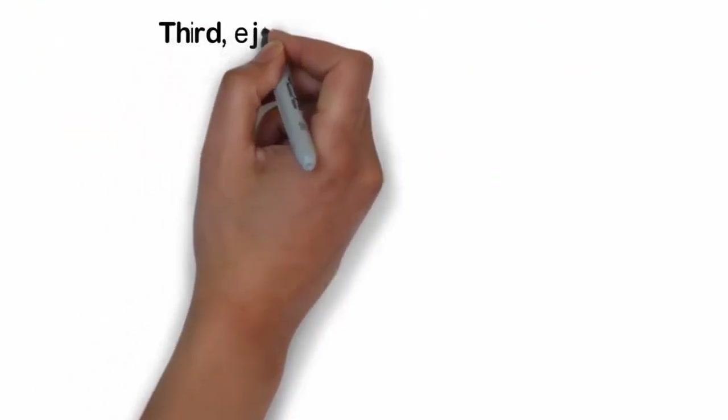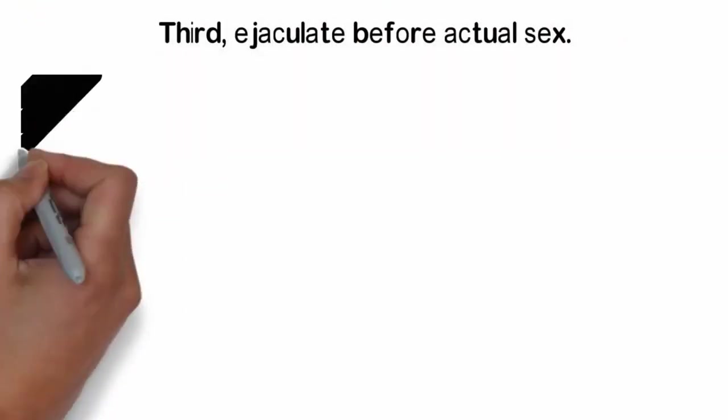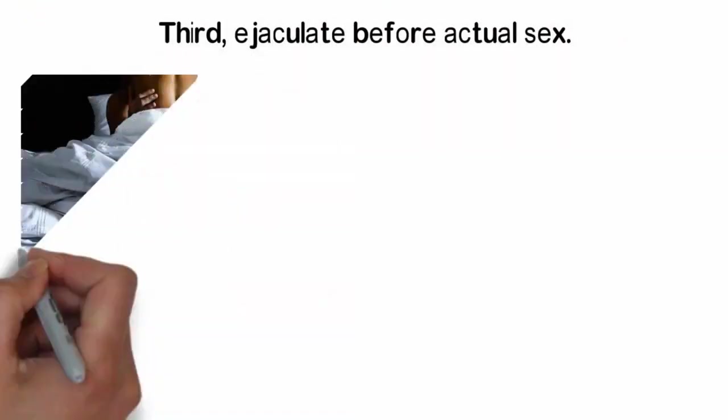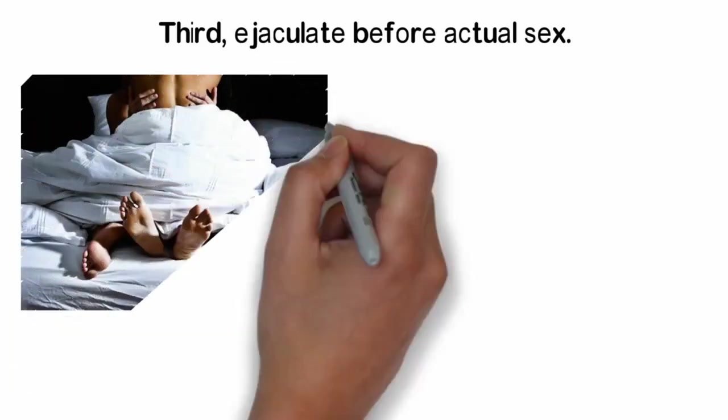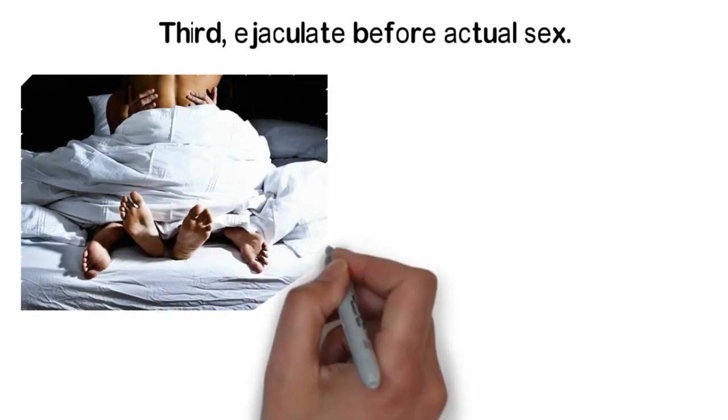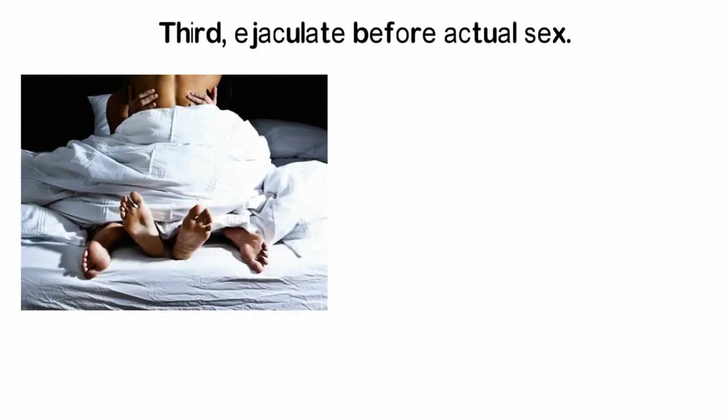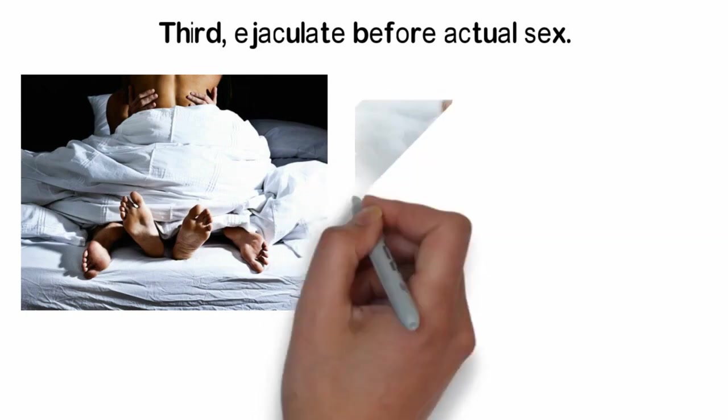Third, ejaculate before actual sex. One of the simplest answers to the question of how to last long in bed is by having an ejaculation before the actual sex. How to do this? Simple. Just masturbate and let yourself ejaculate half an hour before your actual sex. The theory behind this is very simple.